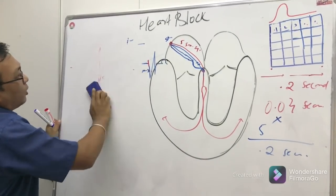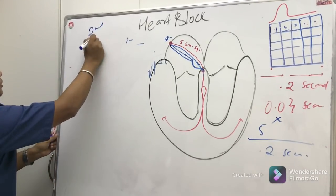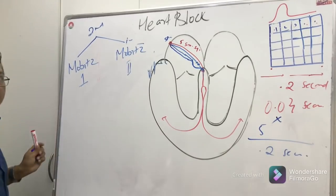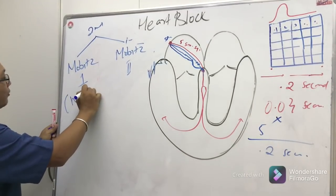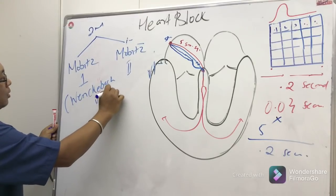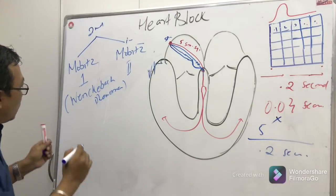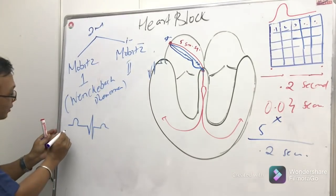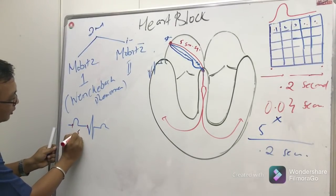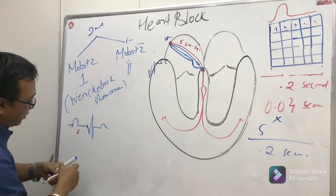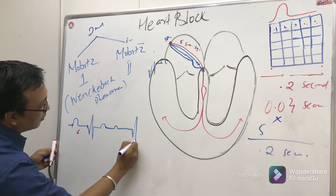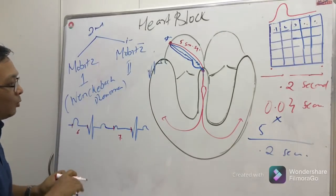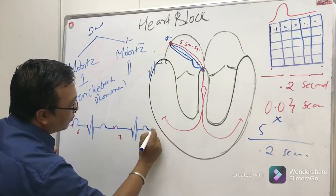Second degree heart block is divided into two types: Mobitz Type 1 and Mobitz Type 2. In Mobitz Type 1, also called the Wenckebach phenomenon, the PR interval increases progressively with each beat. For example, looking at lead II, the PR interval might start at six small squares, then seven, then eight — increasing with each successive heartbeat.